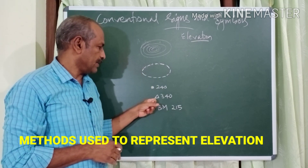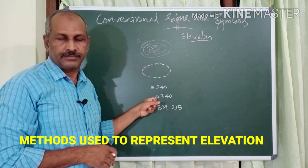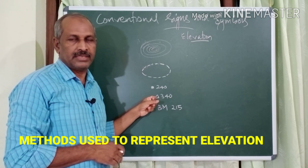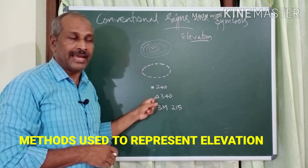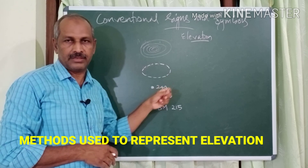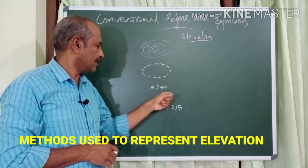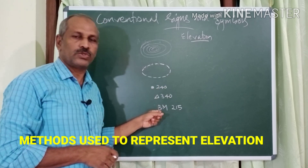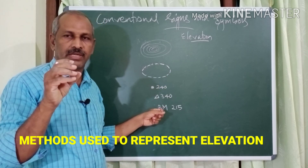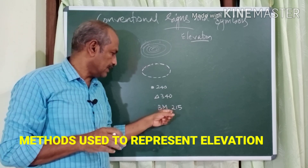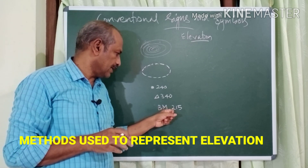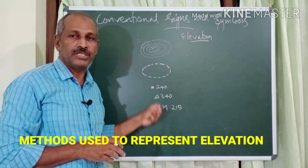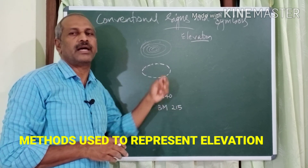A black triangle represents triangulated height. The letters 'B.M.' in block letters with a number written nearby represent benchmark height. These are the five methods by which height is represented in the topographic map.